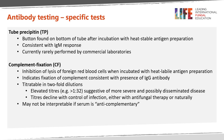Specific tests include the tube precipitin test, which is an analog for IgM antibody. In the traditional test, it produces a button found on the bottom of the tube after incubation with heat-stable antigen. It is currently rarely performed as such and has been replaced by immunodiffusion. Complement fixation is still done by several specialty laboratories; it depends on inhibition of lysis of foreign red blood cells when incubated with heat-labile antigen preparation, indicating the presence of IgG antibody. It can be titrated in two-fold dilutions. Markedly elevated titers, for example greater than 1:32, are suggestive of more severe and possibly extrathoracic disseminated disease. Titers decline with control of infection, either with antifungal therapy or naturally. Occasionally a true CF test may not be interpretable because the serum is anti-complementary and no result will be obtained.